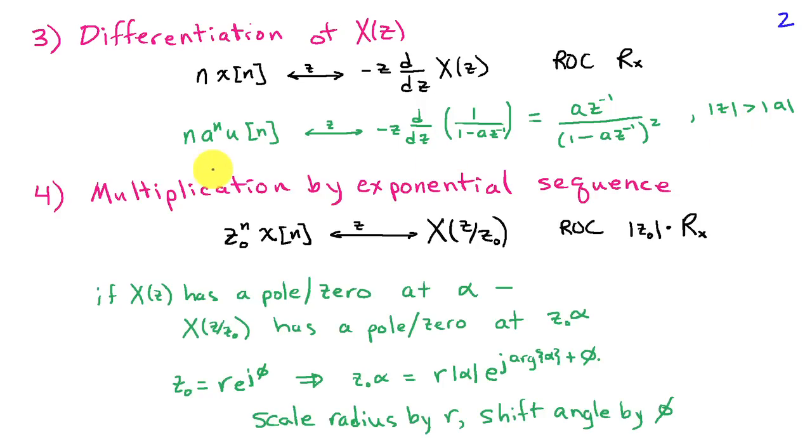A fourth property is multiplication by an exponential sequence. If we take some constant complex number Z-naught and raise it to the n-th power and multiply by X of n, the Z-transform scales Z. Instead of X of Z, we have X of Z divided by Z-naught, and the ROC also scales. If we had an ROC R-sub-X, the new ROC will be the magnitude of Z-naught times R-sub-X. This implies that if X of Z has a pole or zero at location alpha, then X of Z over Z-naught has a pole or zero at Z-naught times alpha.